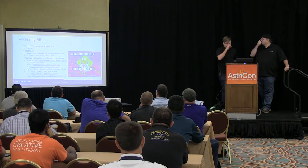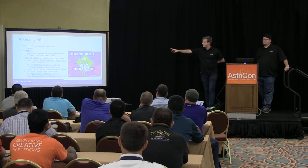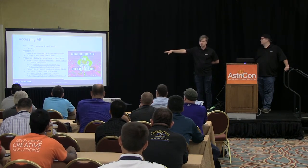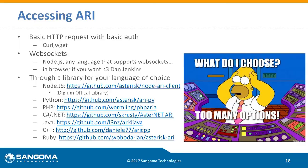Ways to access ARI. These are all the libraries, sourced from the Asterisk wiki. You can see there's Node.js, Python, PHP, C Sharp, Java, C++, and Ruby.